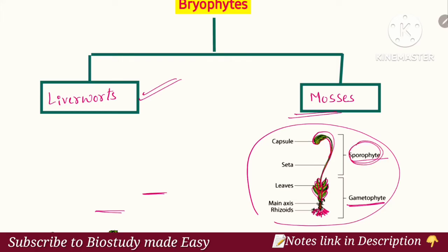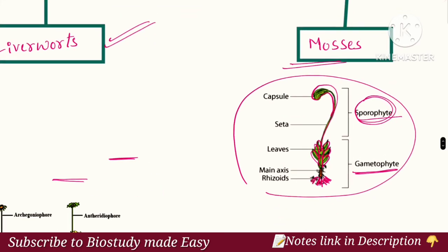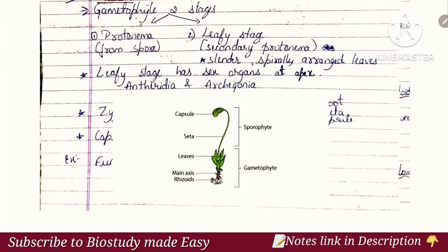In mosses, the sporophyte develops from the gametophyte. The sporophyte is divided into three parts: foot, seta, and capsule. The foot is the base, the seta is the stalk-like structure, and the capsule is at the top.